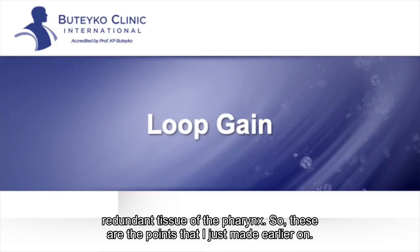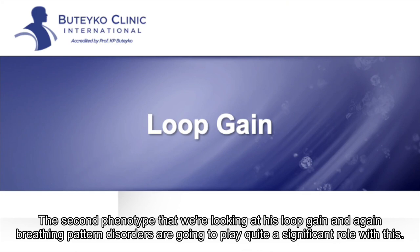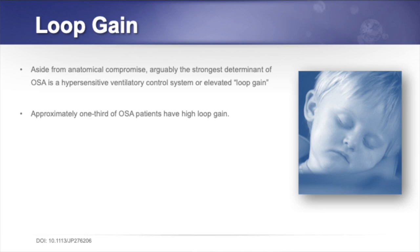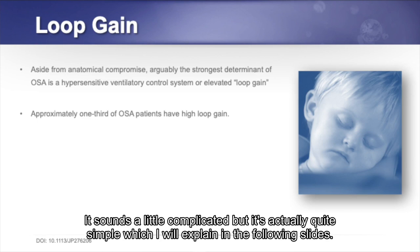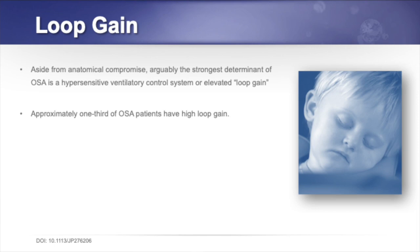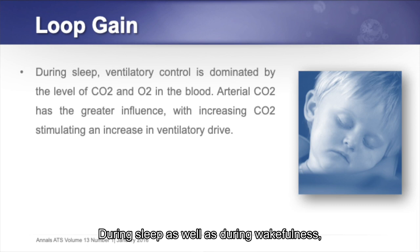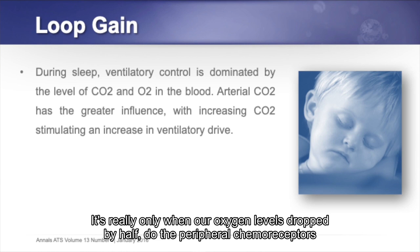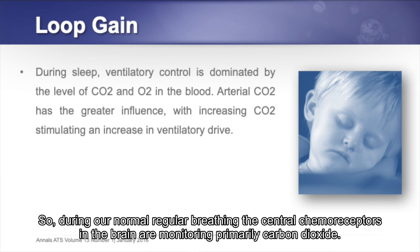The second phenotype is loop gain, and breathing pattern disorders play a significant role here. Aside from anatomical compromise, arguably the strongest determinant of OSA is a hypersensitive ventilatory control system, or elevated loop gain. Approximately one-third of people have high loop gain. During both sleep and wakefulness, the primary stimulus to breathe is carbon dioxide, with oxygen playing a lesser role — it's only when oxygen levels drop by half that peripheral chemoreceptors drive breathing. The central chemoreceptors in the brain are primarily monitoring carbon dioxide.